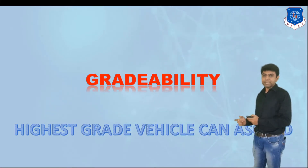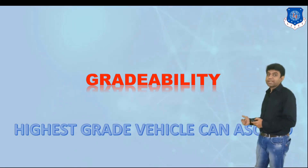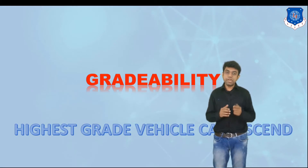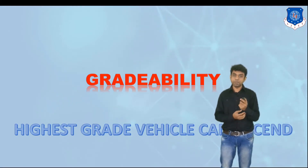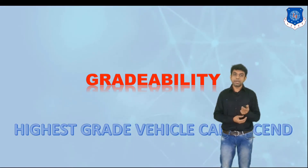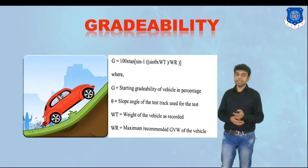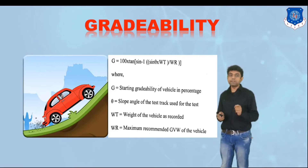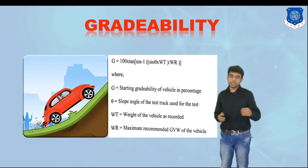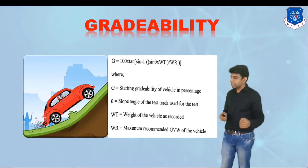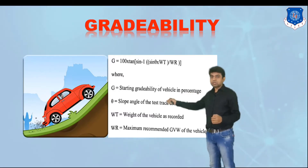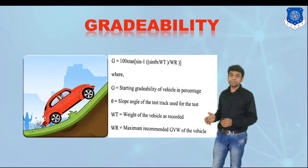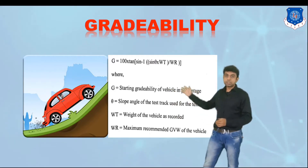The first concept is gradability. Gradability is a term indicating the highest grade a vehicle can ascend. This is determined during vehicle design — we evaluate at what particular angle of slope the vehicle can ascend. In this practical gradability test, we verify the design; for example, if the design indicates 30 degrees of grade, we check in a practical setup whether the vehicle actually ascends that 30-degree slope.